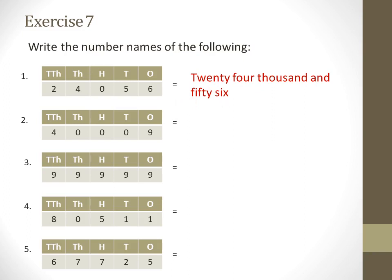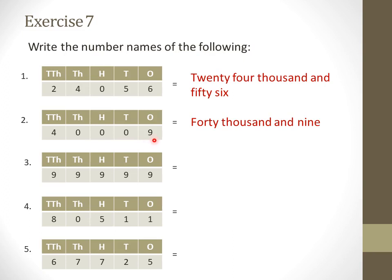Moving on to the next example: 4, 0, 0, 0, 9. Starting from the left, 4 is written under 10,000, so we will read thousands as well. Under the thousands section we have 40, so how many thousands? We have 40,000. Next, under hundreds we have 0, and under tens we have 0, so we skip those. Under ones, what is written? 9. So I will write only 9. The number name is forty thousand and nine.